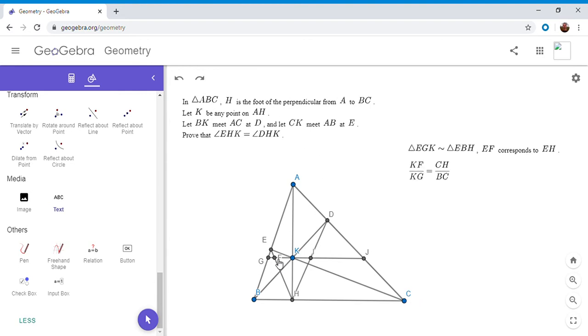So since F splits the segment GK in the same ratio that H splits the segment BC, we have KF over KG is CH over BC, because those are corresponding parts of those two similar triangles. And then doing the same thing, we have triangle DKJ is similar to DBC. And so KI over KJ is BH over BC.